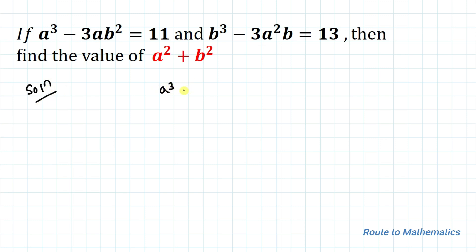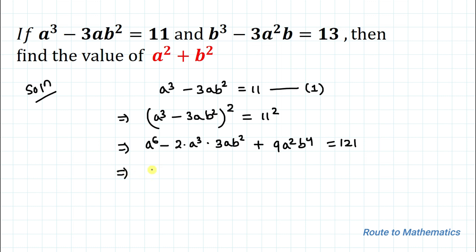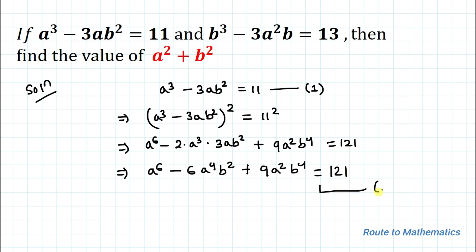Our first equation is a³ - 3ab² = 11. Now squaring both sides, we have (a³ - 3ab²)² = 11² = 121. Applying the algebraic identity, this gives a⁶ - 6a⁴b² + 9a²b⁴ = 121. Let's call this equation 1a.